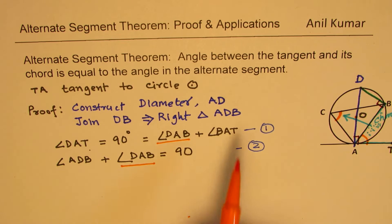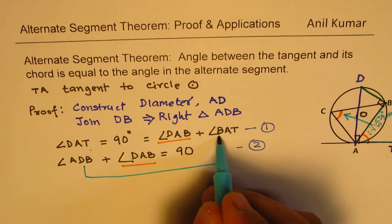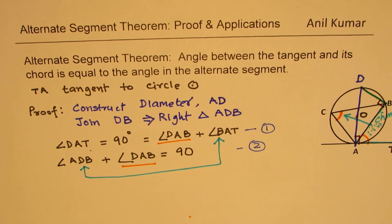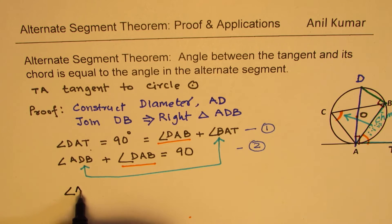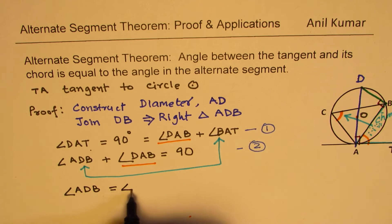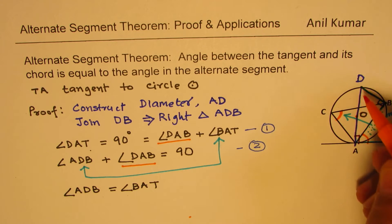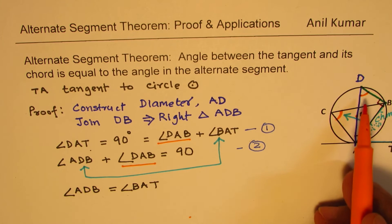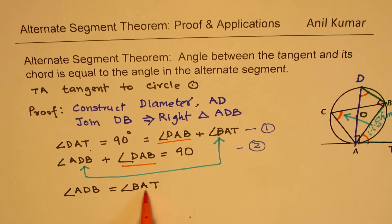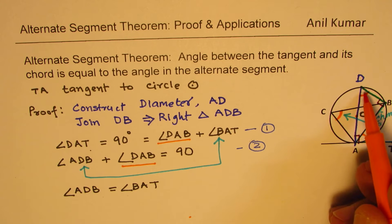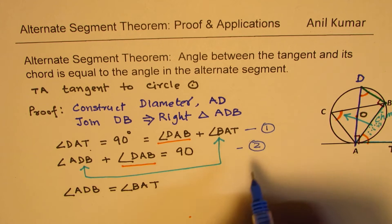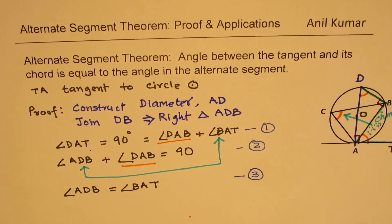Since we have angle DAB plus BAT equal to 90 degrees, and we have DAB plus ADB equal to 90 degrees, that clearly indicates that these two angles should be equal. So we get that angle ADB is equal to angle BAT. That means angle ADB — this new angle formed — is equal to angle BAT, which is the angle the tangent makes with the chord. So these two are equal angles — that is our third equation.